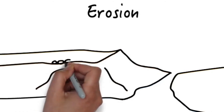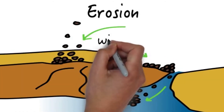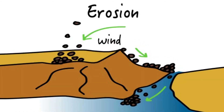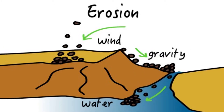Erosion is another major cause for the wear of objects on Earth's surface. Wind, water, or gravity slowly move objects about Earth's surface, gradually changing the landscape.